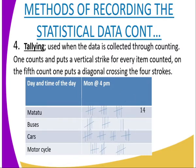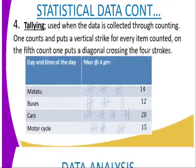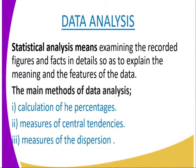From the tallying example, you can see the trucks were 14, buses were 12, cars were 20, and motorcycles were 15. The next topic is data analysis. How do we analyze the data? Statistical analysis means examining the recorded figures and facts and details so as to explain the meaning and the features of the data.